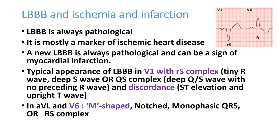LBBB is always pathological — it is mostly a marker of ischemic heart disease, rarely due to other conditions like LVH or rate-dependent LBBB. A new onset of LBBB is always a sign of myocardial infarction or acute coronary syndrome. In LBBB, in V1 you can see an RS complex, and in V6 you can see an M-shaped or notched QRS complex. After the M-shaped wide QRS, there is ST depression and T wave inversion — meaning with a positive QRS in V6, the ST will be depressed.